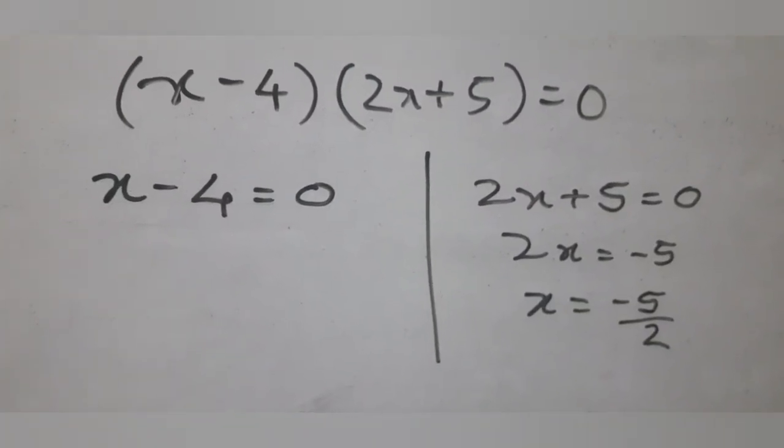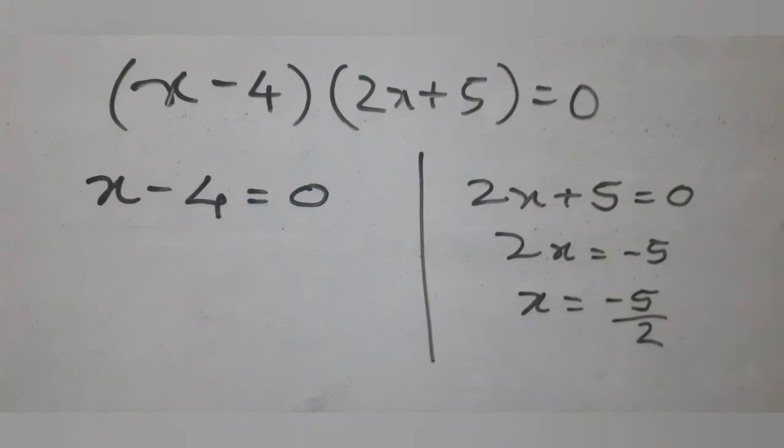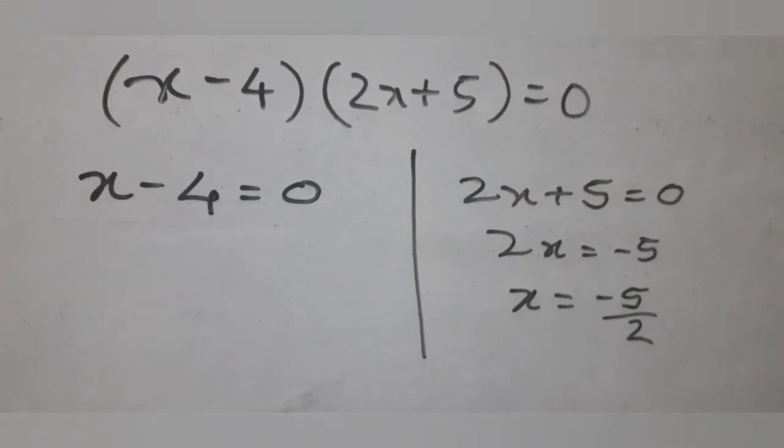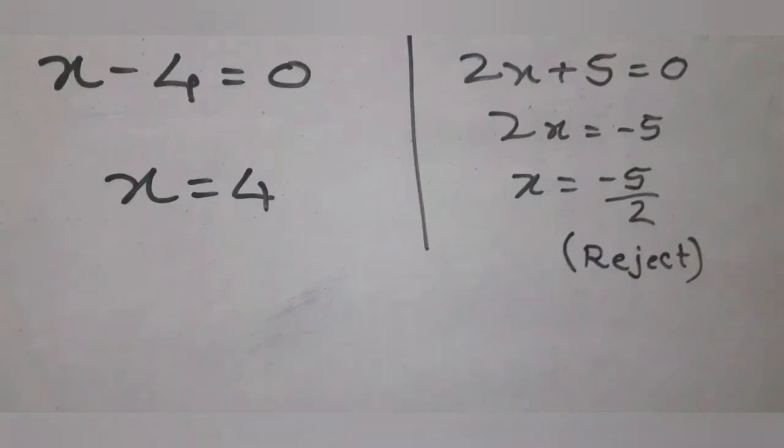Solving, we get x equal to 4 or x equal to minus 5 by 2. But since age cannot be negative, x equal to minus 5 by 2 is rejected.